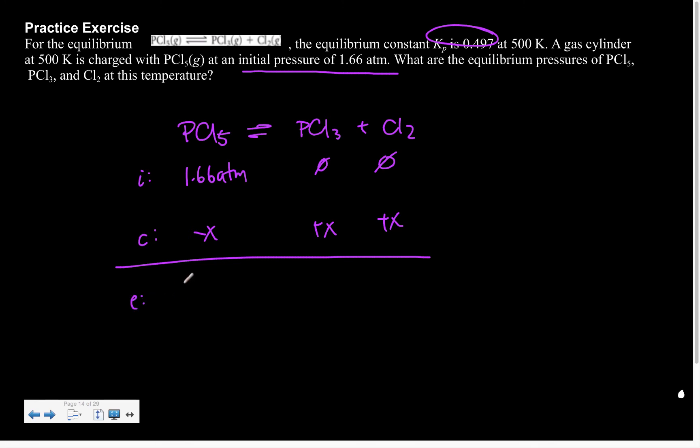Which means that my equilibrium concentration is going to be 1.66 minus x. And this is going to be x and x. Now, if I think about my K expression, I know that K is equal to PCl3 times Cl2 over PCl5. And currently, based on what I know, that's going to be x times x over 1.66 minus x.